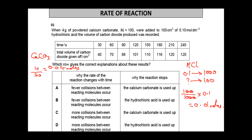So Option A is wrong because calcium carbonate is in excess, not used up. Option B states: fewer collisions between reactant molecules occur, and the hydrochloric acid is used up — this is correct. Options C and D suggest more collisions, which is wrong. Option B is the correct answer because HCl is used up and fewer collisions occur as concentration decreases.